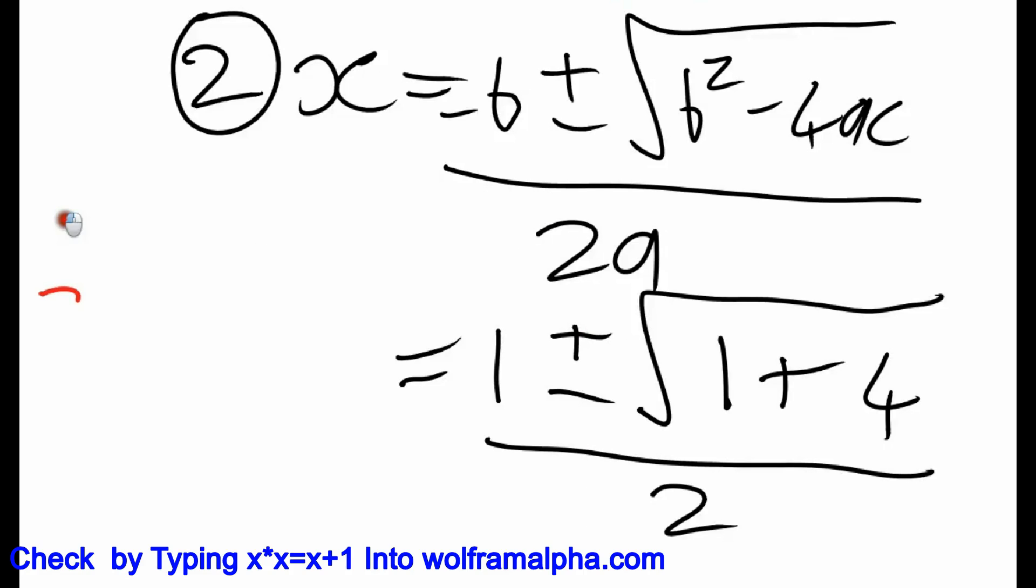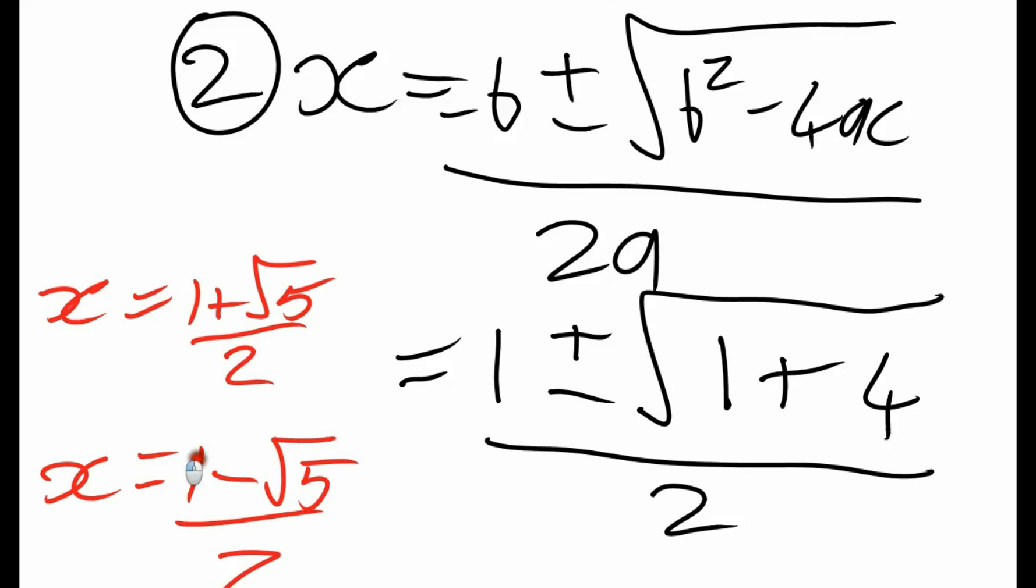We're done. There's just two possibilities. x equals 1 plus the square root of 5, divided by 2. Or x equals 1 minus the square root of 5, all divided by 2.